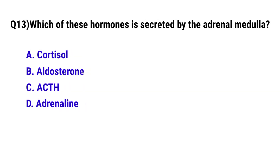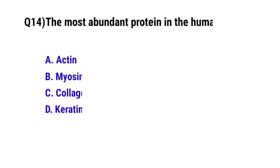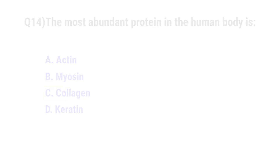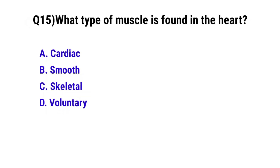Question 13: Which hormone is secreted by the adrenal medulla? The correct option is D: adrenalin. Question 14: The most abundant protein in the human body is? The correct option is C: collagen. Question 15: Which type of muscle is found in the heart? The correct option is A: cardiac muscle.